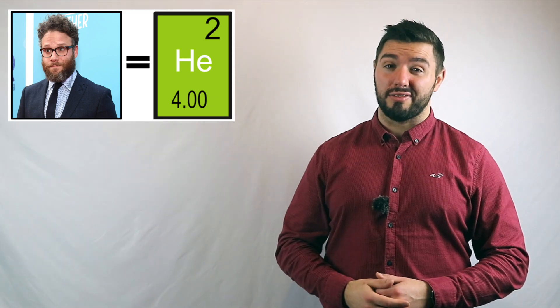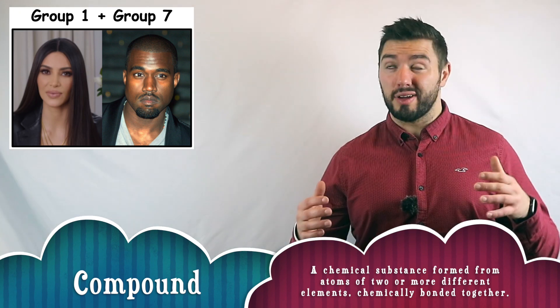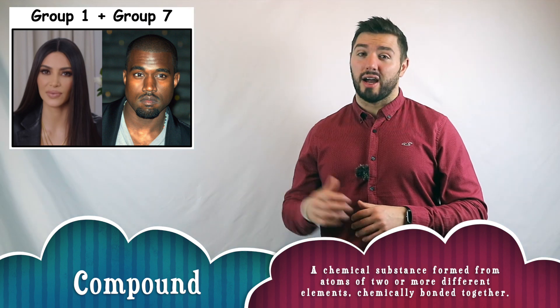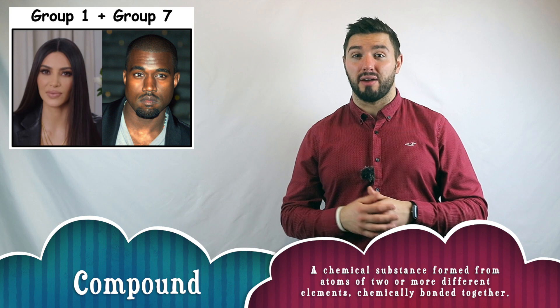Going back to that group one and group seven couple though, it's a bit like forming a compound. You can take two different elements, sometimes ones that are even super reactive, and get them to bond together to form something stable. Just like that group one and group seven couple. We call that a chemical reaction. And those elements are bonded together. Just like that couple that's always kissing in school.